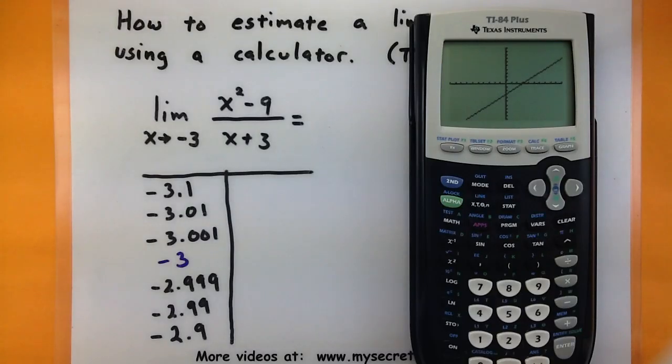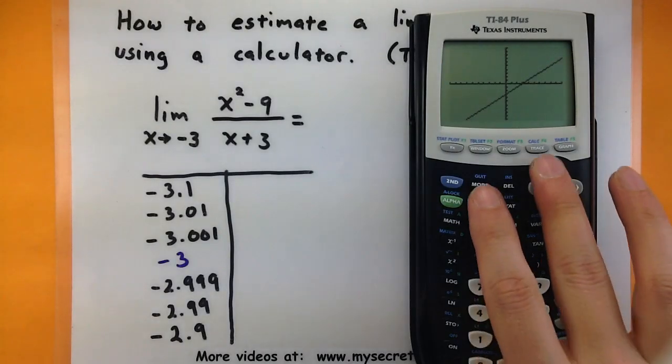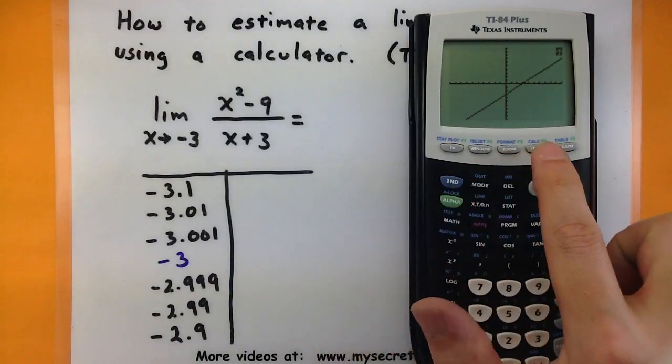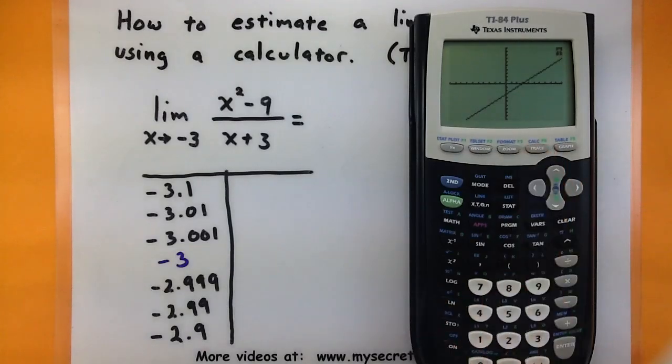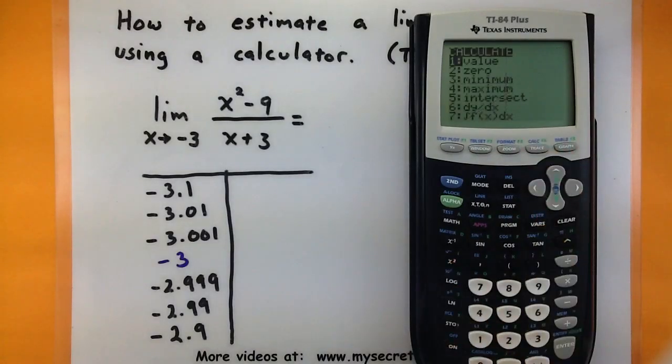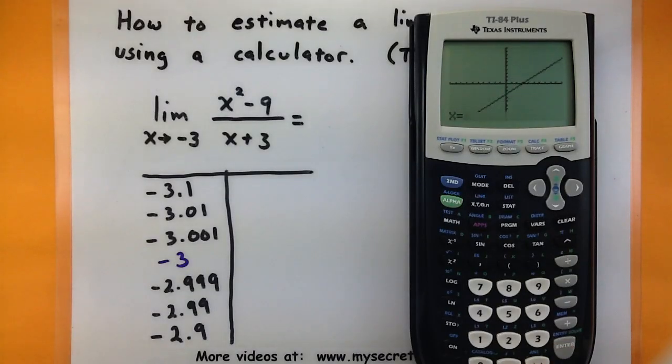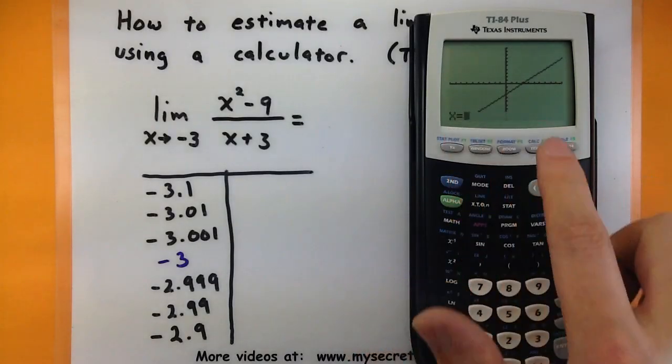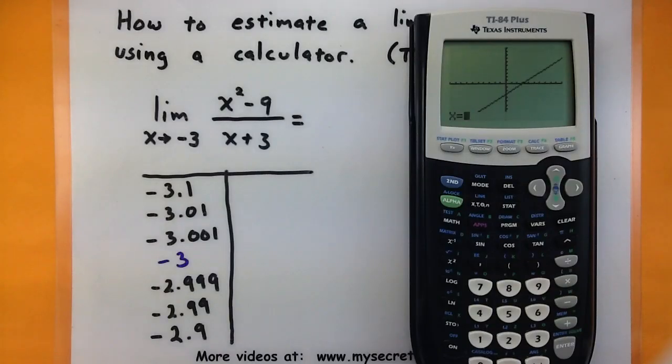To make the calculator do this, we need to use the calc function, so go to second and press the trace. It has a little calc above it. And then we'll use option 1 that says value. So I'm going to press enter. Now here's where we can basically type in what x value we want to plug into the function. So starting with our first one, I'll use negative 3.1 and then press enter.